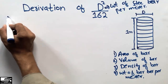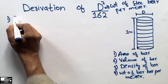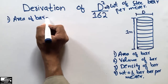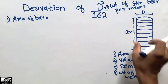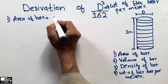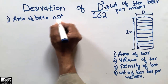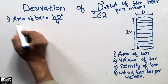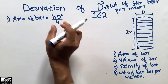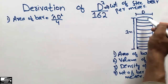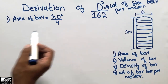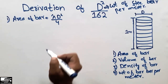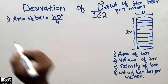The first step is to find the area of the steel bar. Since the steel bar is circular, its area is equal to πD²/4. This is the formula used to find the area of a circular object, so the area of the bar is πD²/4.